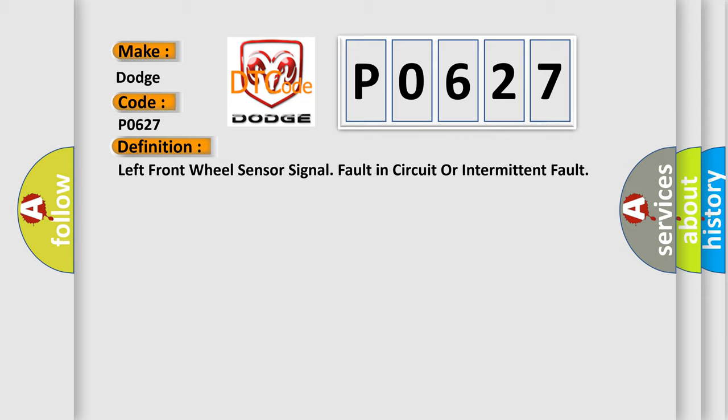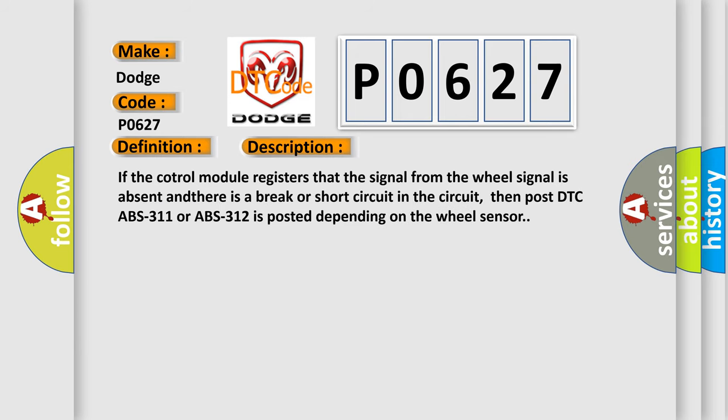And now this is a short description of this DTC code. If the control module registers that the signal from the wheel sensor is absent and there is a break or short circuit in the circuit, then DTC ABS 311 or ABS 312 is posted depending on the wheel sensor.